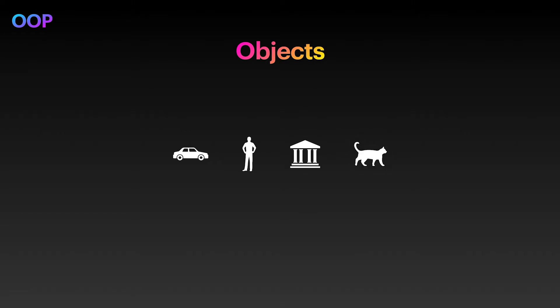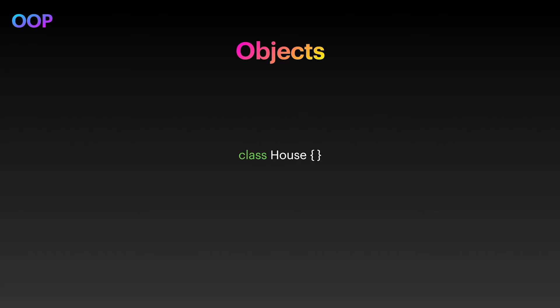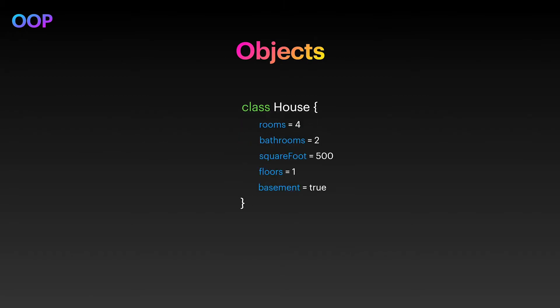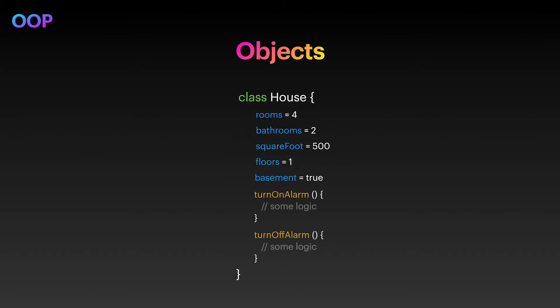The way to represent and create objects is by using a class. Objects can have values which in a class are called properties, and objects can do things which in a class are called methods. Think of a class as a blueprint to create objects.